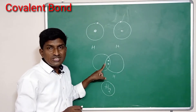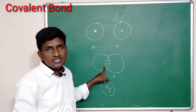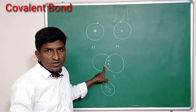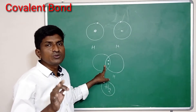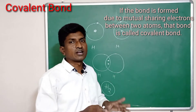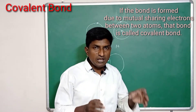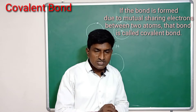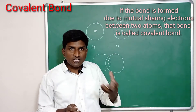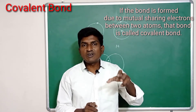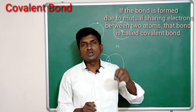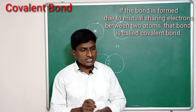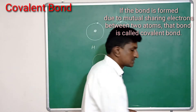So sometimes the bond is also formed due to mutual sharing of electrons. This type of bond is called a covalent bond. In the covalent bond, the bond is formed due to mutual sharing of electrons — each atom contributes electrons, a pair of electrons is formed, and these pairs are mutually shared by the two atoms.